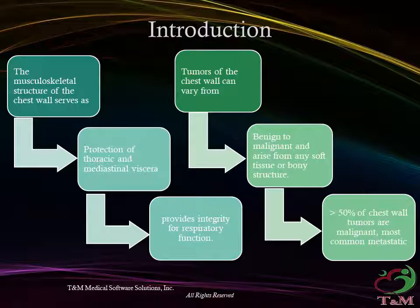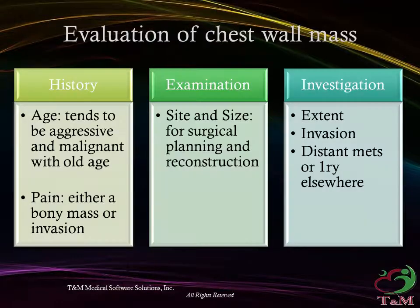The musculoskeletal structure of the chest wall serves a critical role in the protection of thoracic and mediastinal viscera, and provides integrity for respiratory function. Tumors of the chest wall can vary from benign to malignant, and arise from any soft tissue or bony structure. More than 50% of chest wall tumors are malignant, typically involving direct invasion or metastasis from adjacent thoracic tumors.